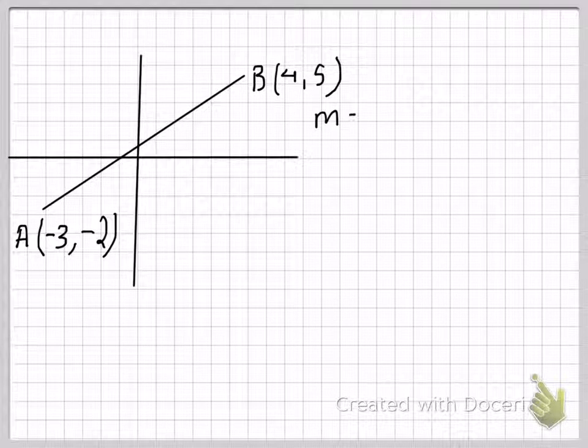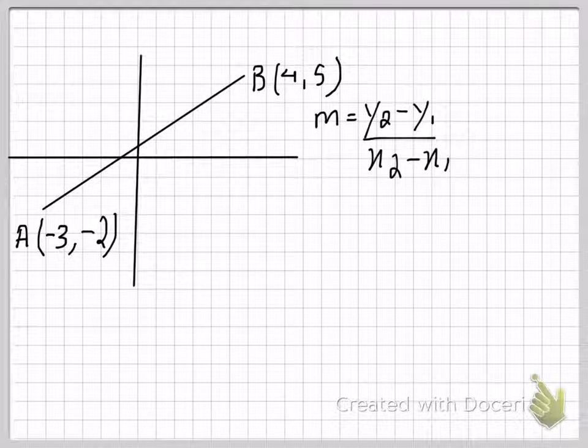As I explained earlier, slope is equal to y2 minus y1 over x2 minus x1. Now let's take 5 to be y2, and if I take 5 to be y2, minus 2 will automatically be y1. So 5 minus minus 2 will give you the change in y over 4 minus minus 3 will give you the change in x.